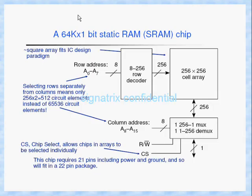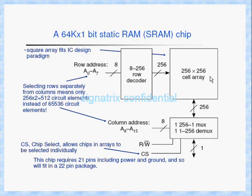Looking at this slide, we have a 64K by 1, one-bit static RAM. Here we have a 256 by 256 cell array. In general, the address will be divided into two parts: the first one is the row decoder and the second one is the column decoder. This is our cell array.